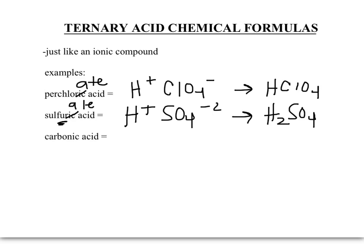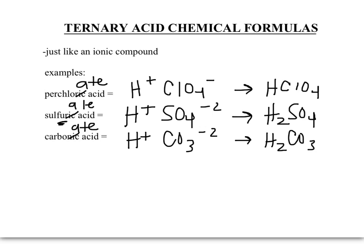In carbonic acid, the '-ic' ending again came from '-ate,' so we're looking for carbonate. Hydrogen and carbonate: CO3 with a minus two charge. H2CO3 is the chemical formula for carbonic acid.